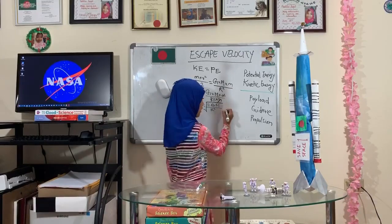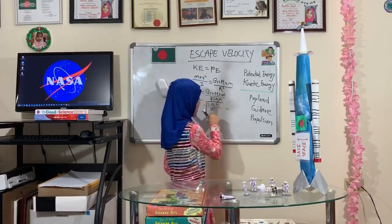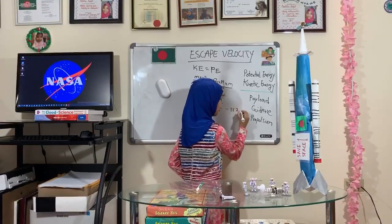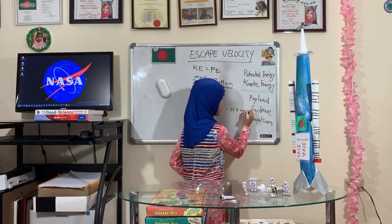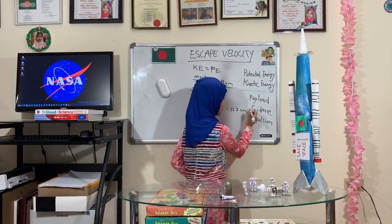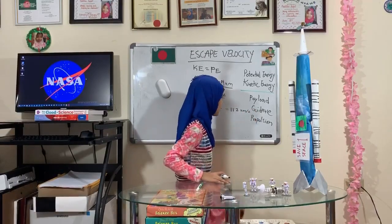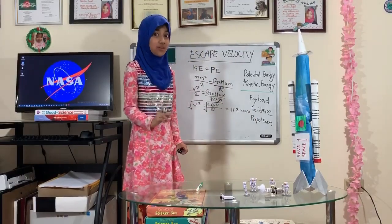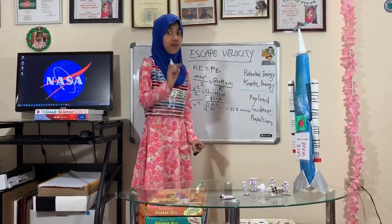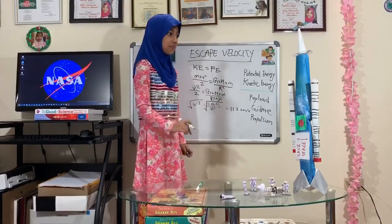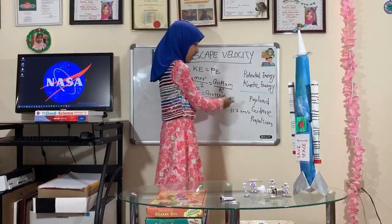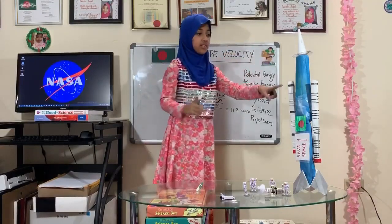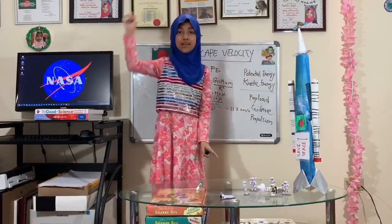Scientists have done the math and figured out that this escape velocity is actually 11.2 kilometers per second. That is a very, very long distance in a very, very short time. So I have just figured out that I need this much speed for this rocket to go up into space and collect the debris.